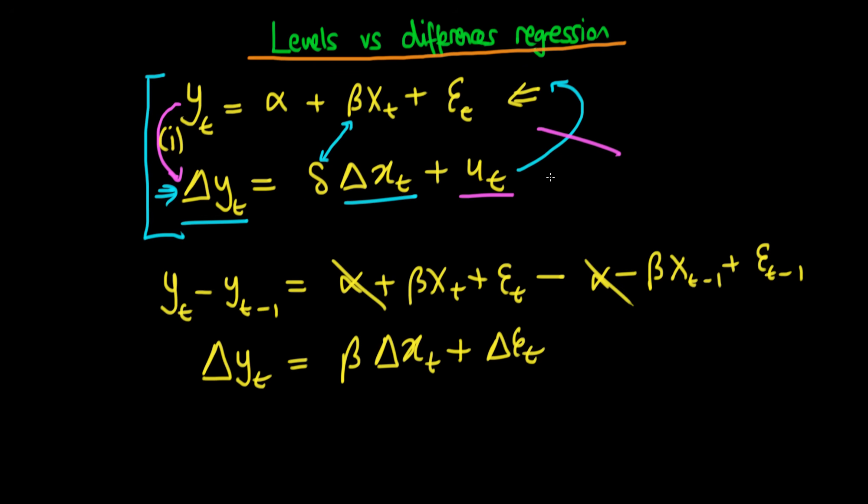So the idea with my simulation is that I am randomly generating some delta x, and then I'm assuming that there is this relationship between delta y and delta x. Then if I assume the first value of the x series, in other words the value of x at time 1 equals 0...